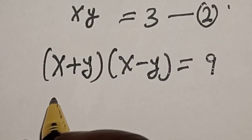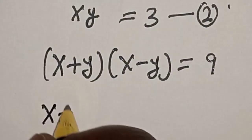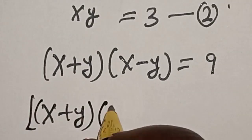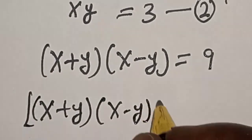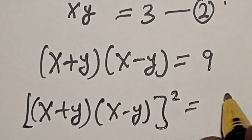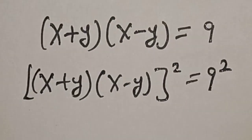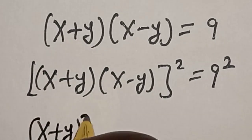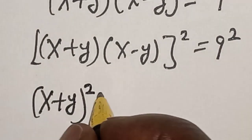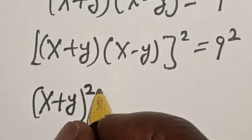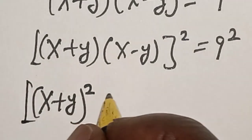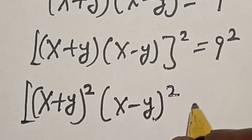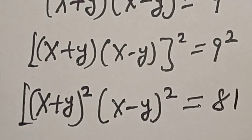Then let's square both sides. We have (x plus y) multiplied by (x minus y), squared, is equal to 9 squared. This is the same as (x plus y) squared multiplied by (x minus y) squared is equal to 81.